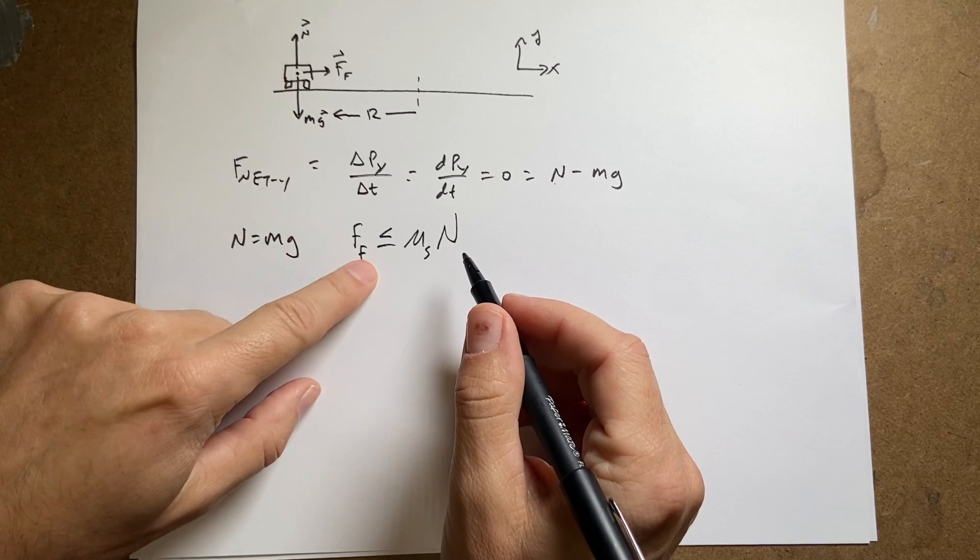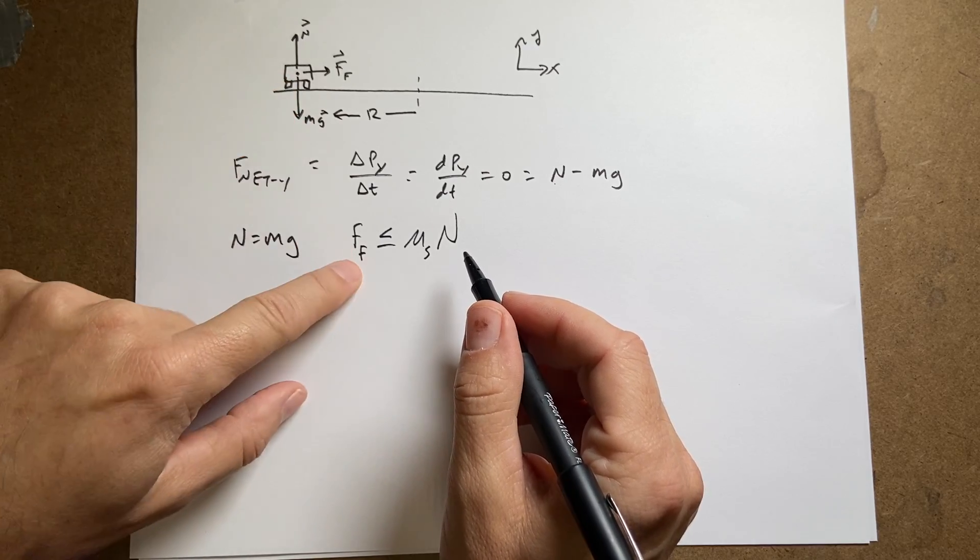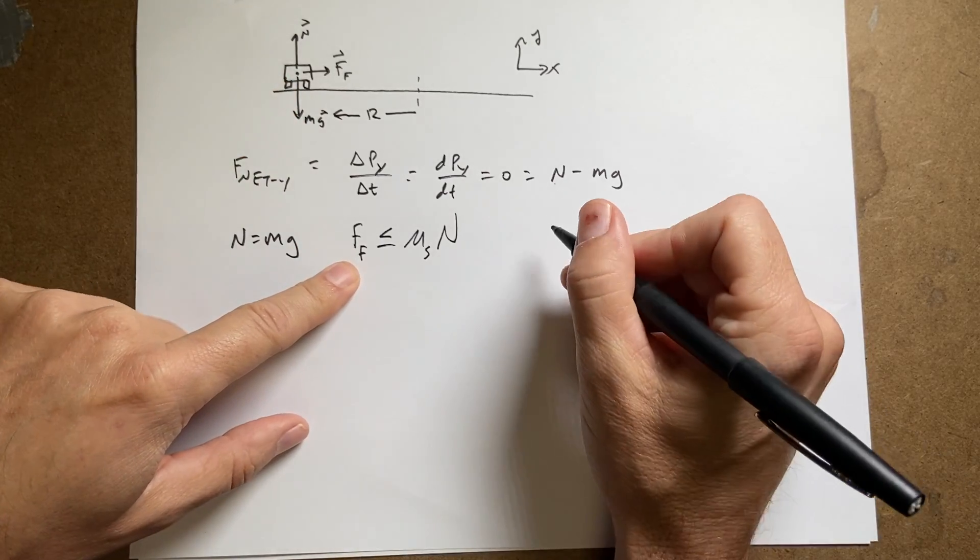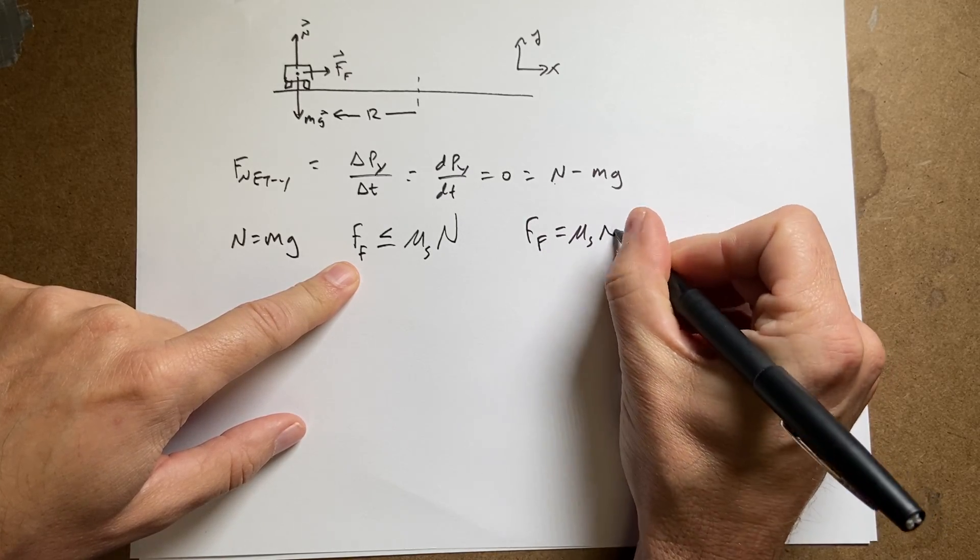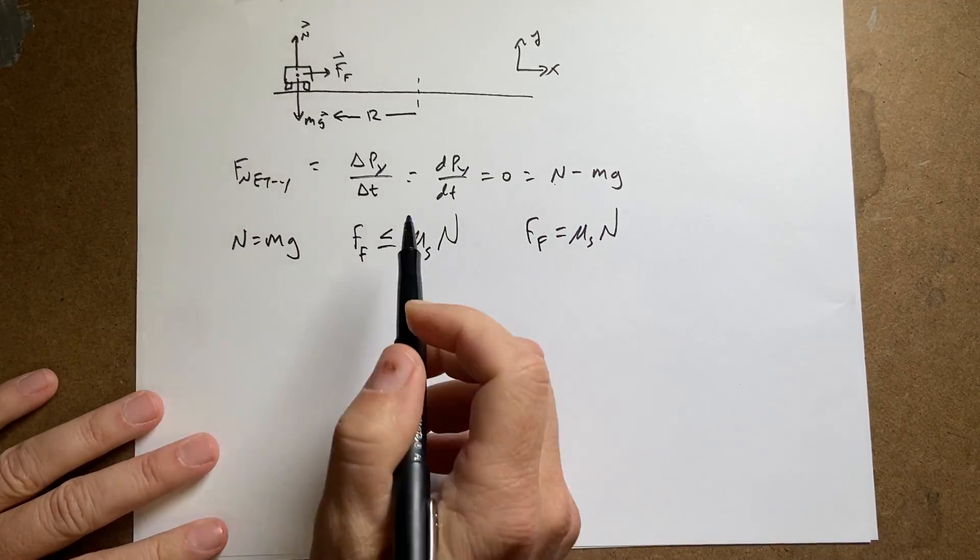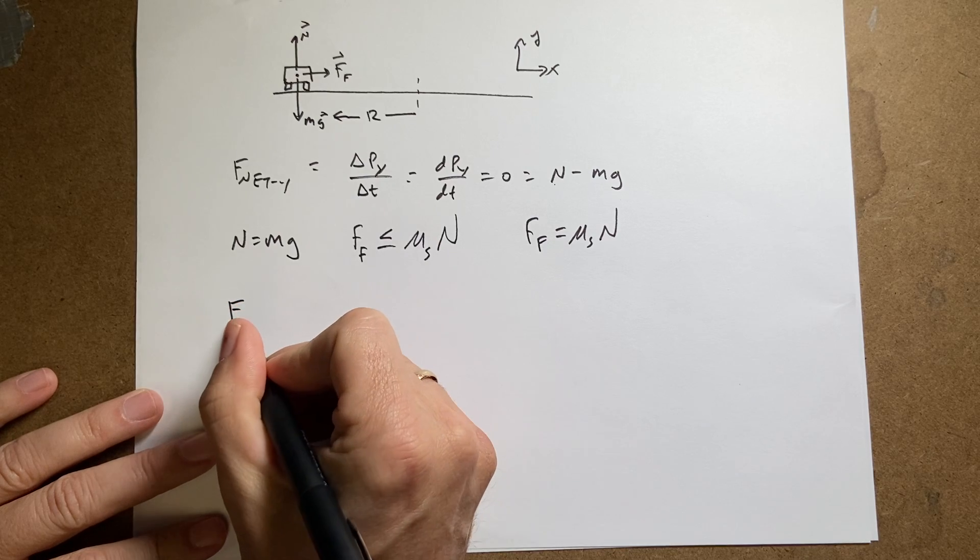And this is less than or equal to, but I want to find out how fast it's going. So I'm going to look at the maximum friction force. So the maximum friction is equal to the coefficient of friction times the normal force.